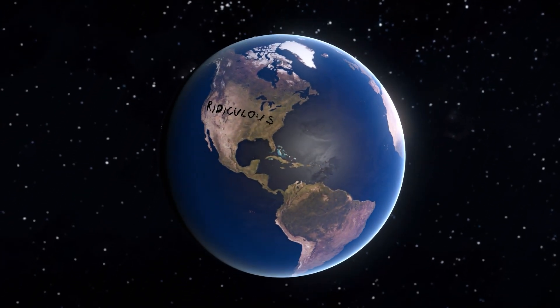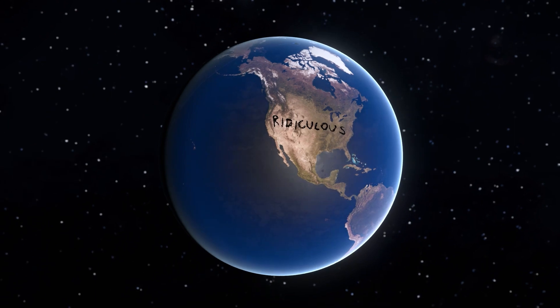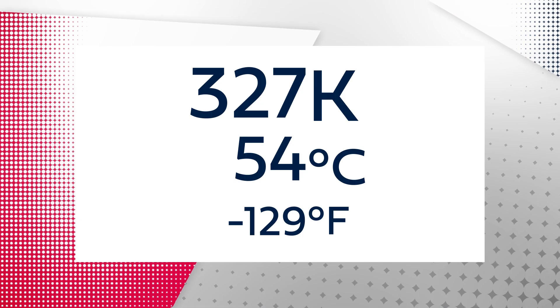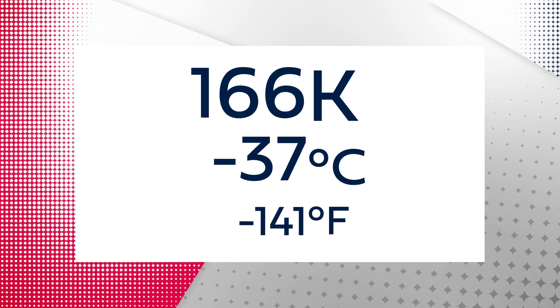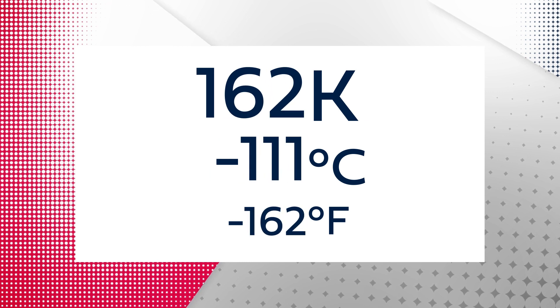Accounting for this effect, what we call the planetary albedo, a measure of how reflective the planet is, the planetary equilibrium temperature plummets to a mere 162 Kelvin, or minus 111 degrees Celsius.